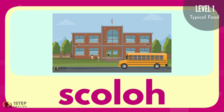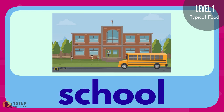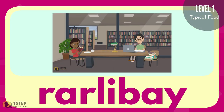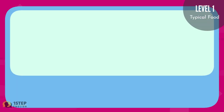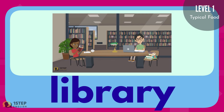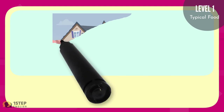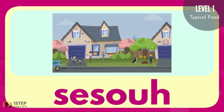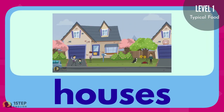S-C-O-L-O-H. The correct answer is S-C-H-O-O-L — School. R-A-R-L-I-B-A-Y. The correct answer is L-I-B-R-A-R-Y — Library. S-E-S-O-U-H. The correct answer is H-O-U-S-E-S — Houses.